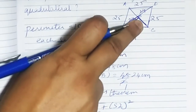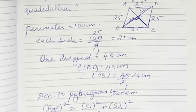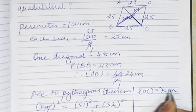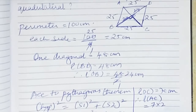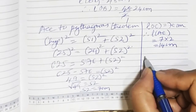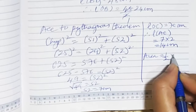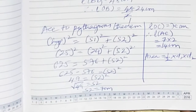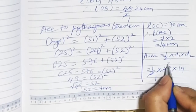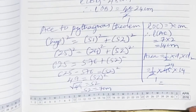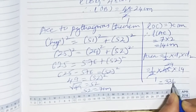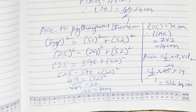If this half is 7, the whole second diagonal is 7 into 2 equals 14 centimetres. Length OC is 7 centimetres, therefore length AC is 14 centimetres. Now one diagonal is 14 and the other diagonal is 48. Therefore area equals half into d1 into d2, which is half into 48 into 14. That gives 24 into 14, which is 336 square centimetres. Final answer: 336 square centimetres.